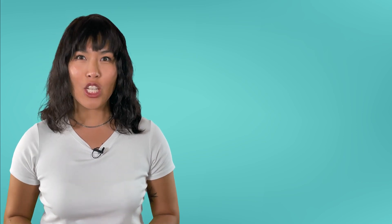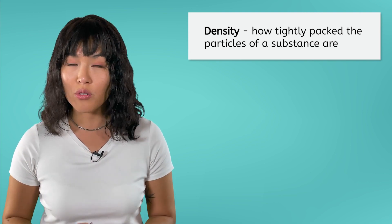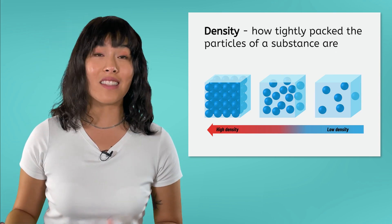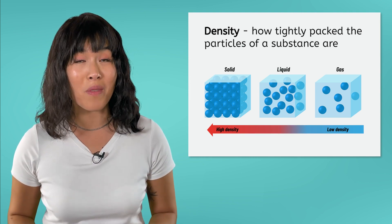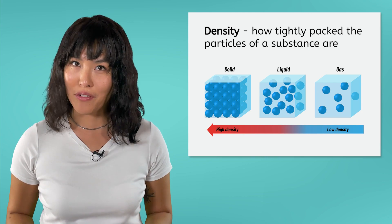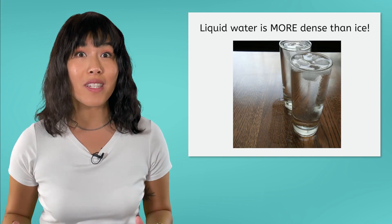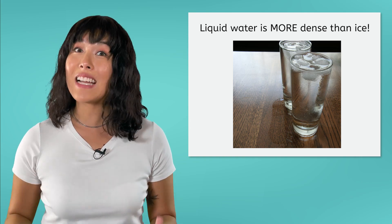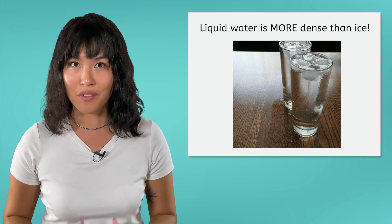When studying fluids, we'll often consider their density. Do you remember studying density earlier in the course? Density tells us how tightly packed the particles of a substance are. For most substances, the solid form is the most dense. Interestingly, however, water is an exception to this rule, with liquid water being more dense than solid water, or ice. That's why ice floats to the top of your glass. In our next lesson, we'll consider in more depth how density relates to sinking and floating within fluids.